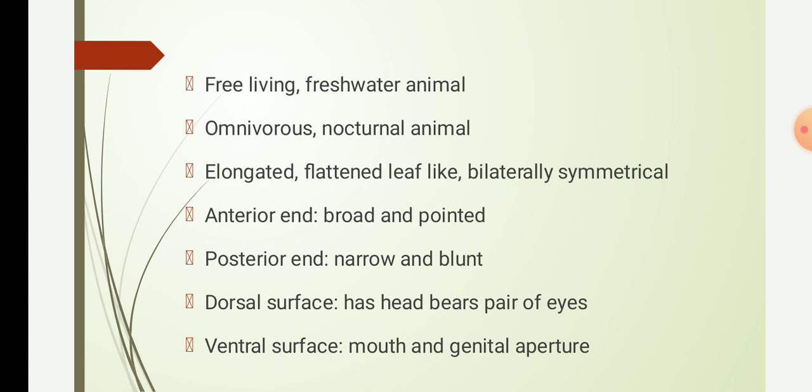The body of Planaria is divided into two regions: the head and the trunk. The head is triangular in shape and has a pair of lateral conical projections called auricles. The head bears a pair of eyes on the dorsal side. The mouth is situated in the middle of the body on the ventral surface.